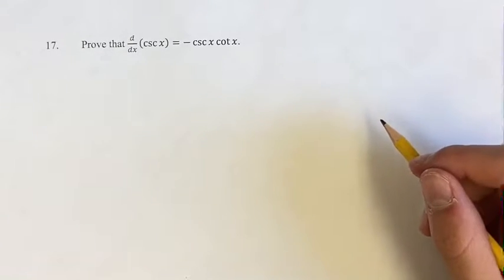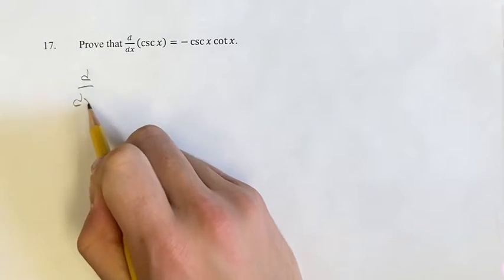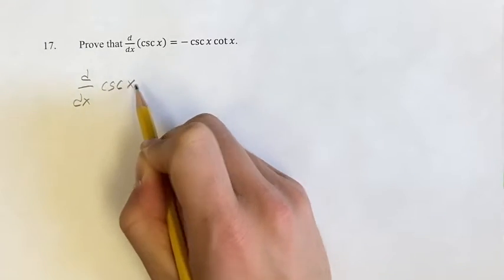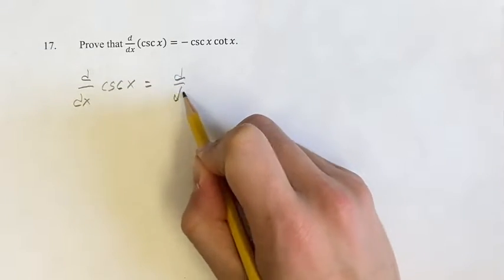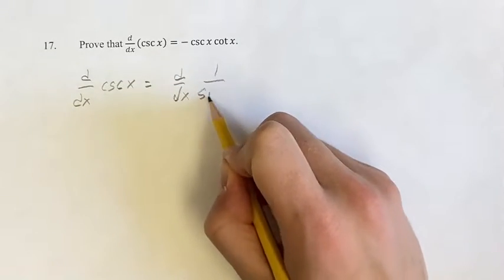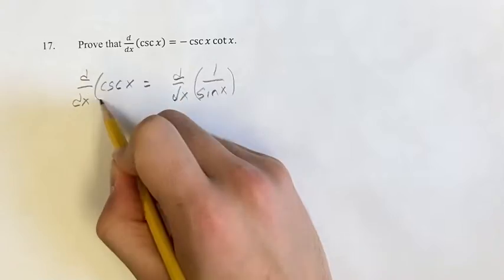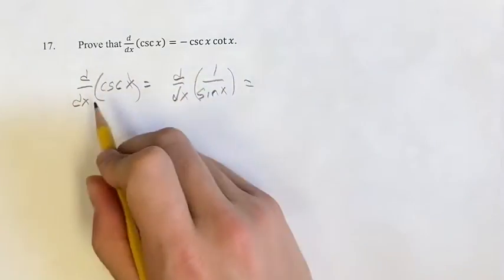So the way that we're going to do this is we're going to say the derivative of cosecant x is equal to the derivative of 1 over sine x, since cosecant is 1 over sine.